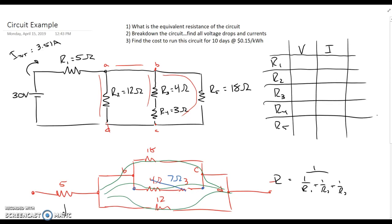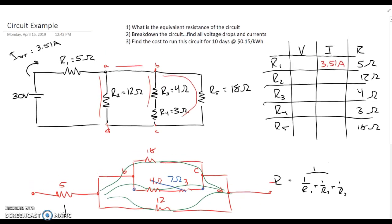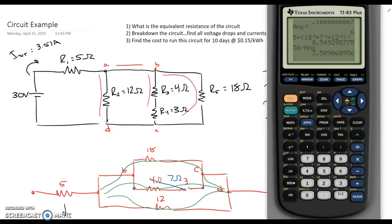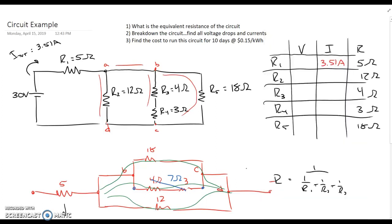So if we look here, we have a total current of 3.51 amps as our total. And that means that R1, because it's in series, will also see all 3.51 amps. It's the only one in series, so it gets all the current. Now because I know that R1 is 5 ohms, I can use V equals IR and solve for the voltage. 3.51 times 5 gives me a voltage drop of 17.5 volts across that first one. So now I've broken down the first resistor.